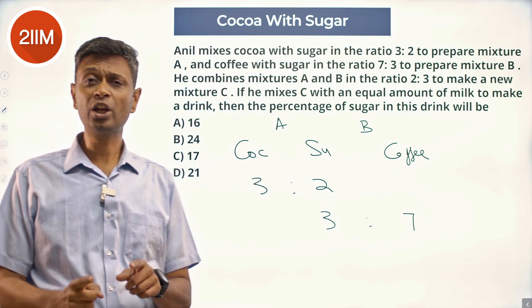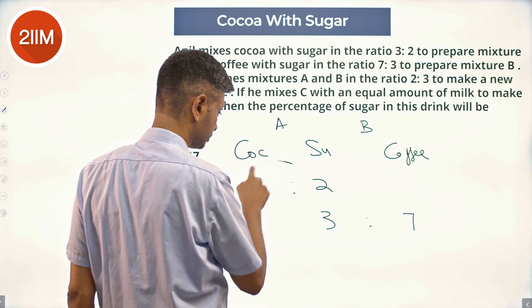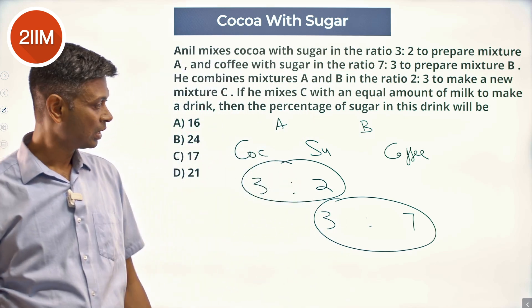He combined mixtures A and B in the ratio 2 to 3. So, the total number of units here is 5. Total number of units here is 10. Mixing in the ratio 2 to 3.